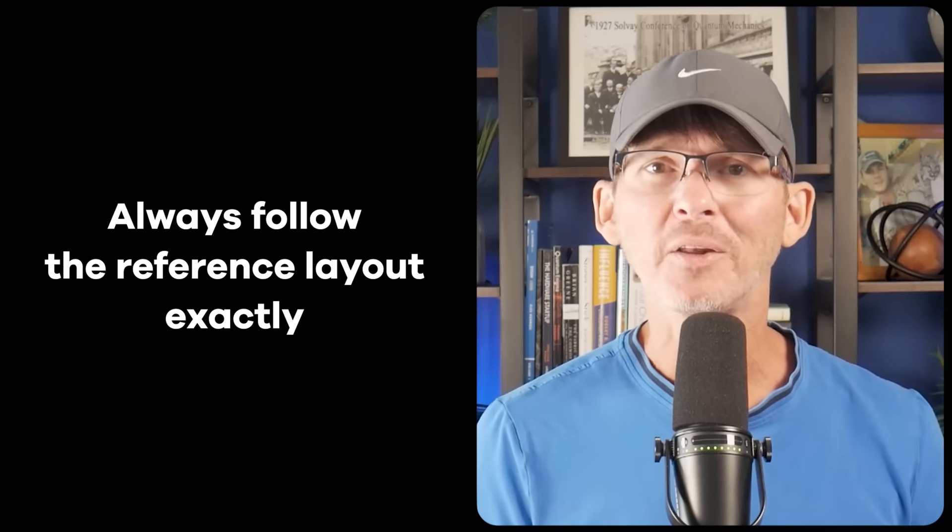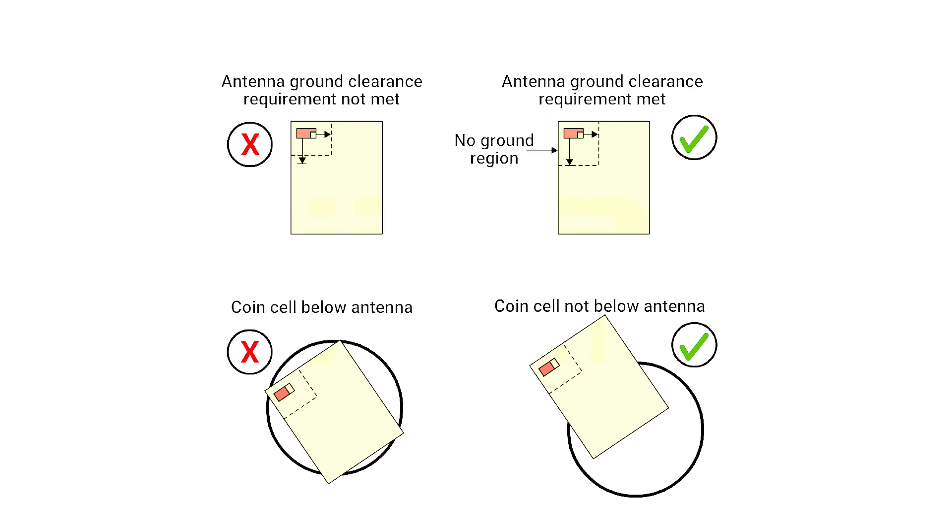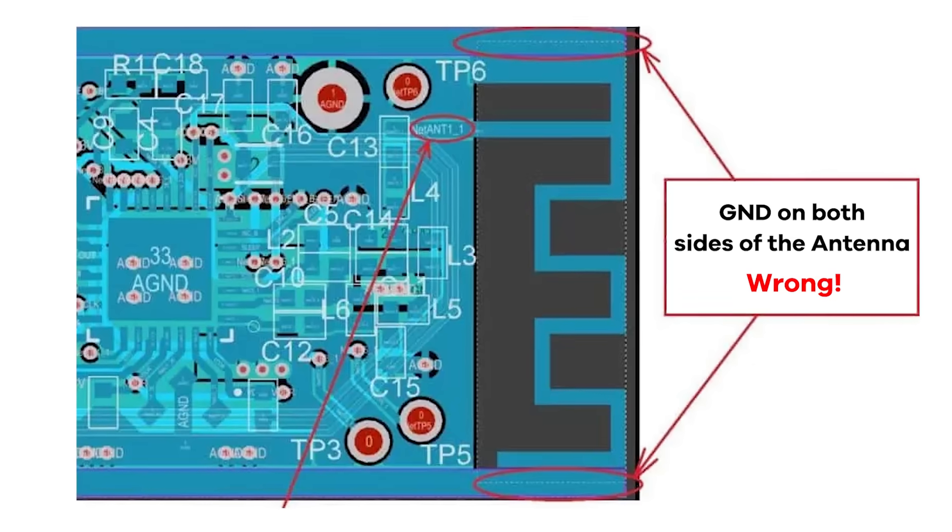Poor antenna design can lead to failed RF certification due to spurious emissions or insufficient radiated power. Even worse, if you use a pre-certified module but change the layout around the antenna — especially the ground clearance area or keep-out zone — you might void that certification, forcing yourself to go through full RF testing from scratch. Always follow the reference layout exactly, leave the recommended clearance around the antenna, avoid routing signals nearby, and don't place it underneath metal parts of the enclosure.